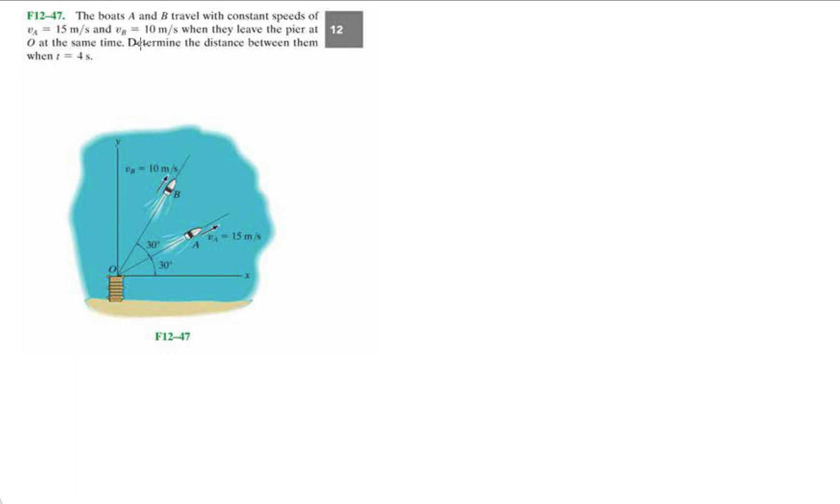So what do we have here? The boats A and B travel with a constant speed of v_A equals 15 when they leave the pier at O at the same time. Determine the distance between them when t equals four seconds. Well, the distance between them when t equals zero we know is zero, right?